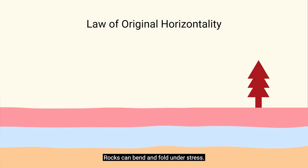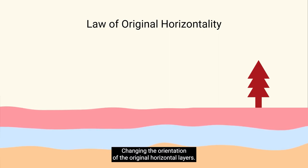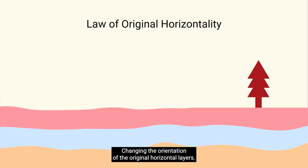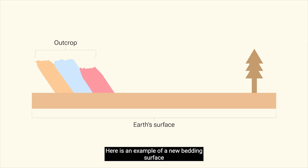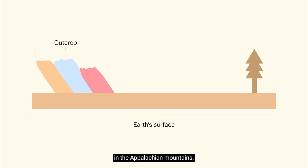Rocks can bend and fold under stress, changing the orientation of the original horizontal layers. Here is an example of a new bedding surface that has undergone deformation and is currently tilted. These rocks are more similar to the outcrops you will find in the Appalachian Mountains.